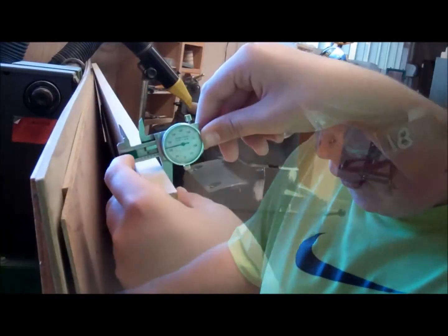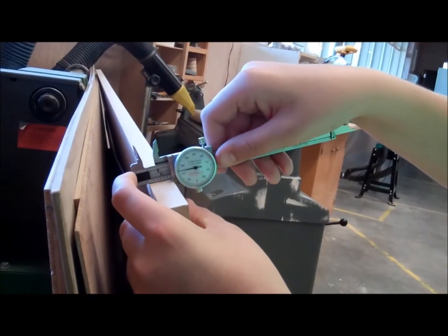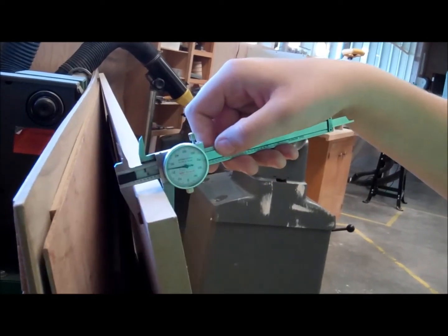Alright, then what's the next step, Ryan? You check the density with the calipers. 0.729 thousandths of an inch.